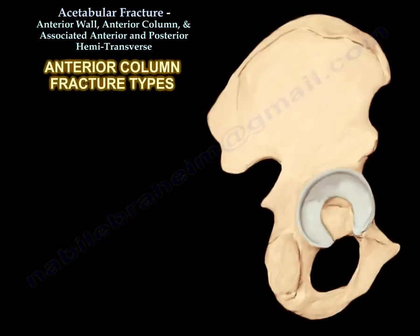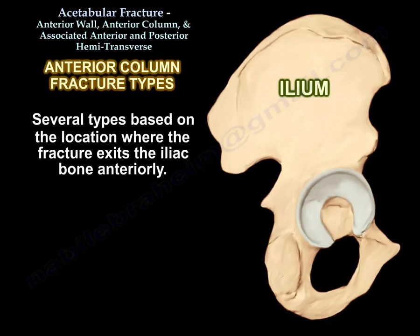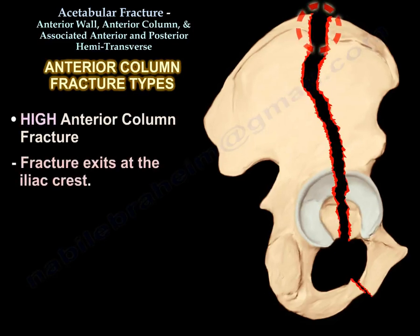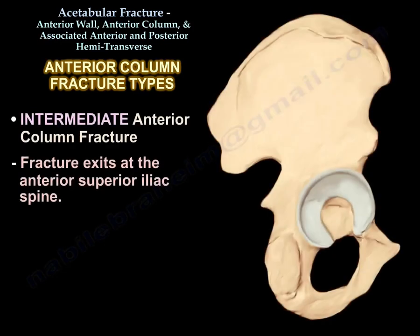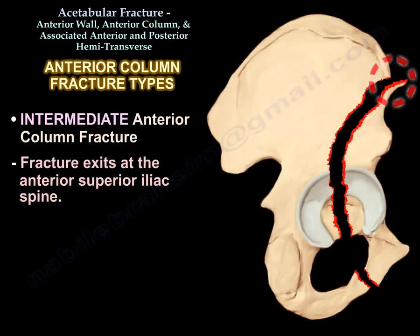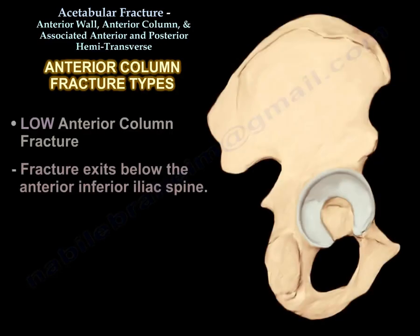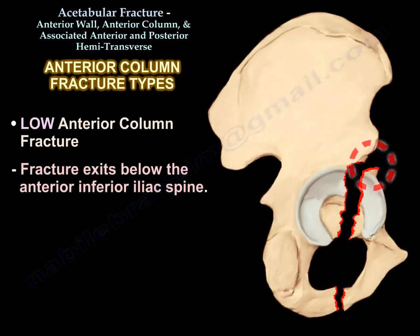Types of anterior column fracture: There are several types based on the location where the fracture exits the iliac bone anteriorly. High anterior column fracture: the fracture exits at the iliac crest. Intermediate anterior column fracture: the fracture exits at the anterior superior iliac spine. Low anterior column fracture: the fracture exits below the anterior inferior iliac spine.